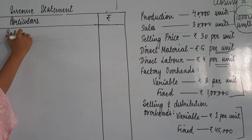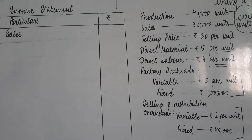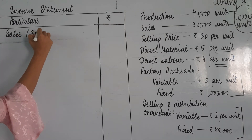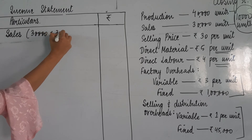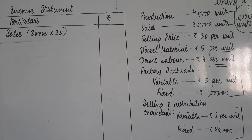Sales: humne kitne number of units beche hai? 30,000 units beche hai aur ek unit par 30 rupees mein beche hai. So the sales value is 30,000 into 30. Now we have to note this total and then we will use this value only after calculating the total of all variable costs.